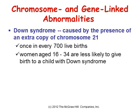Down syndrome is an abnormality caused by the presence of an extra copy of chromosome 21. It occurs in one in every 700 births. Women between the ages of 16 and 34 are less likely to have a child with Down syndrome, but women younger than 16 or older than 34 are at higher risk.